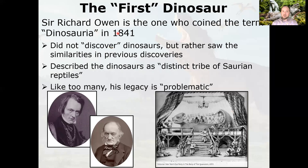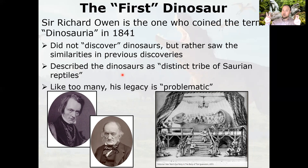Owen coined the term dinosaurs, but he didn't really discover them — they were already being described by others. His contribution was seeing the similarities among already-discovered specimens and grouping them under the Dinosauria. He described them as a distinct tribe of saurian reptiles. I'm not going to ask you on an assessment who coined the term; I care more that you know the root of the word means 'fearfully great reptiles.'